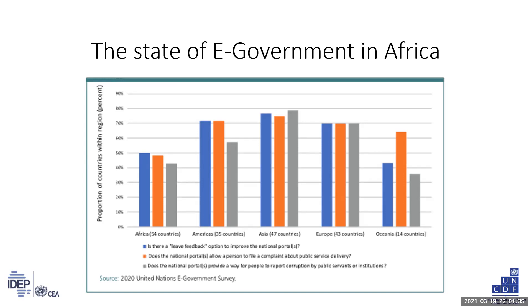Among the 63 countries worldwide at the very high e-participation index level, South Africa is the only country from the continent. Only 8 out of 54 African countries assessed performed e-consultation in the sectors of justice, environment, social protection, employment, and health. Despite the multiplication of platforms for e-participation, in many cases uptake remains low.